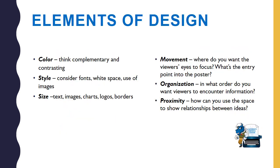The first design element to consider as you build your research poster is color. You want to think about complementary and contrasting colors — colors that are close to each other or across from each other on the color wheel. You also want to take into consideration that some of your viewers might be colorblind, and consider whether they will miss some of your design elements because of that. All of this is to say we should be inclusive in our design element decisions.